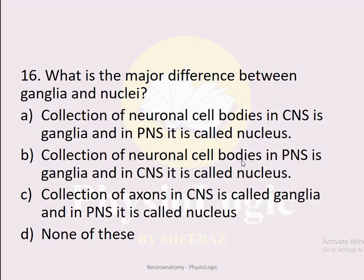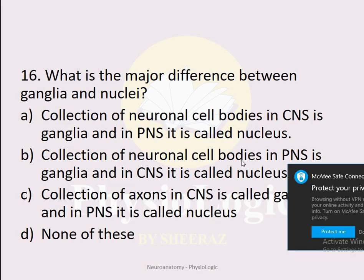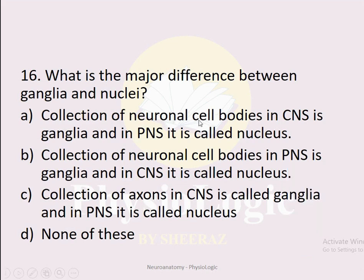MCQ number sixteen: What is the major difference between ganglia and nuclei? Option A: collection of neuronal cell bodies in CNS is ganglia, in PNS it is nucleus. Option B: collection of neuronal cell bodies in PNS is ganglia, in CNS it is nucleus. The correct option is B — in PNS it is called ganglia and in CNS it is called nucleus.